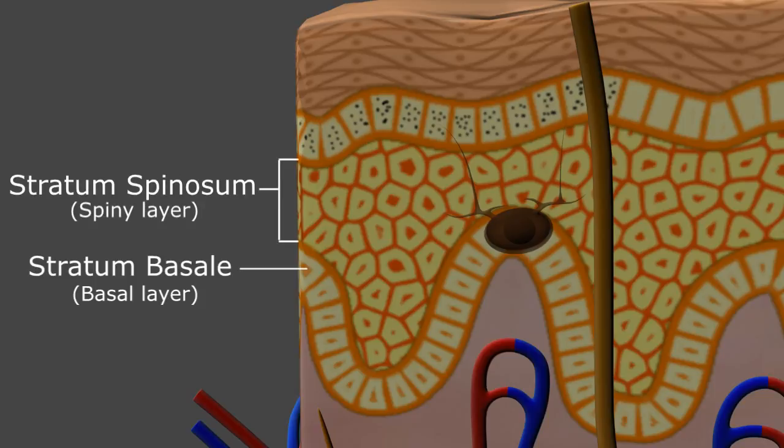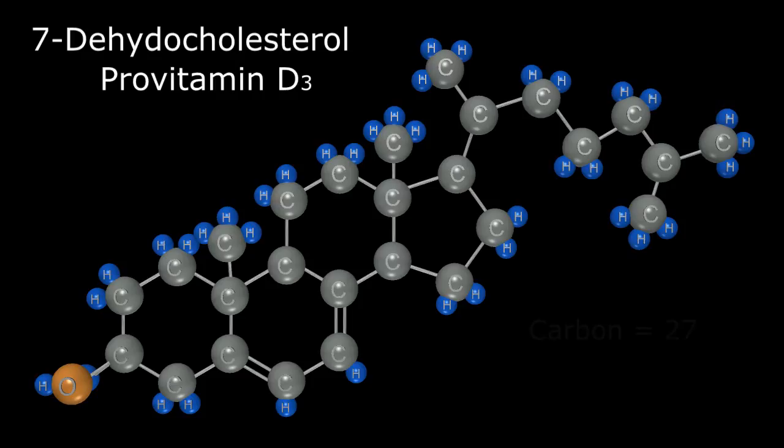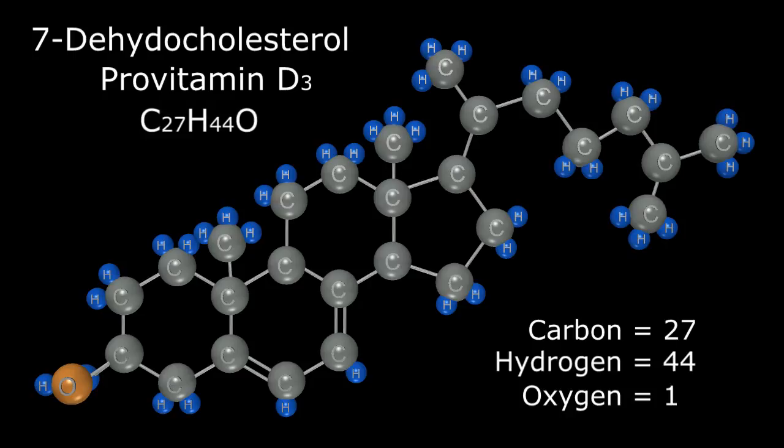These layers contain an organic cholesterol-based compound known as 7-dehydrocholesterol, or provitamin D3, constructed of 27 carbon atoms, 44 hydrogen atoms, and a single oxygen, giving a chemical formula of C27H44O.